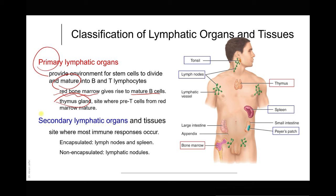Both the red bone marrow and the thymus are primary lymphatic organs. A secondary lymphatic organ or tissue is the site where immune responses occur — there is multiplication of lymphocytes but no maturation. These can be subdivided into encapsulated and non-encapsulated. The encapsulated ones have a connective tissue capsule of dense irregular connective tissue, like the lymph nodes and the spleen. The non-encapsulated ones are the lymphatic nodules found in the small intestine forming Peyer's patches, the terminal ileum, the appendix, and the tonsils in the pharynx — covered by mucous membrane epithelium rather than a connective tissue capsule.